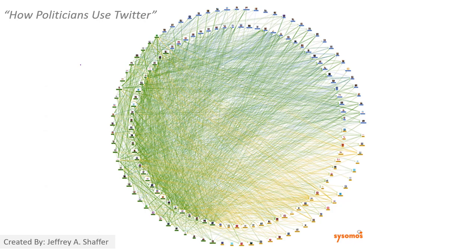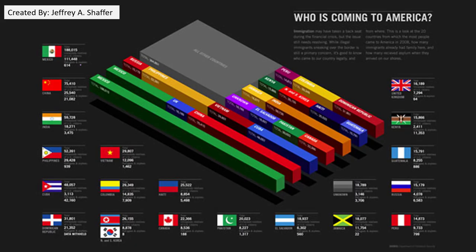This is a network visualization showing politicians and how they are using Twitter. Next week, we will also move on to visualizing networks and we will use Twitter data. Here's another one showing who is coming to the United States — you can see a flag of the United States combined with flags from different other countries.